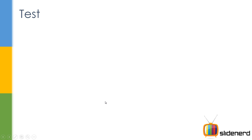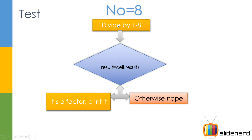Let's go ahead and see how this is done. I'm going to have a number like 8, divide everything by 1 to 8, then ask the question: is result equal to Math.ceil of the result? That is, take the result of division, take the ceil of the result, and check if they are both equal. If they are both equal, that means the number is a factor — print it; otherwise, nope. So let's go ahead and get this running in NetBeans.